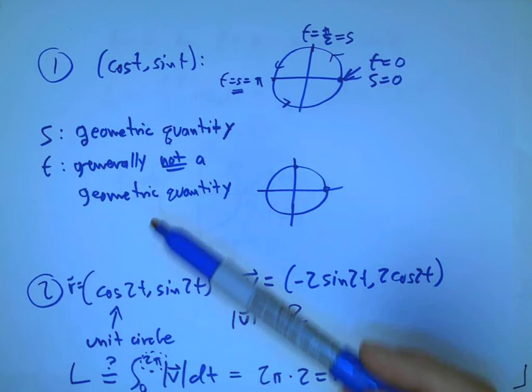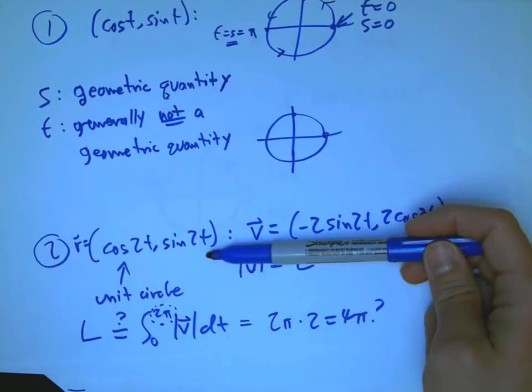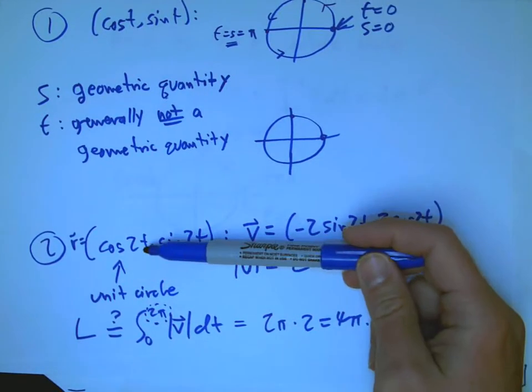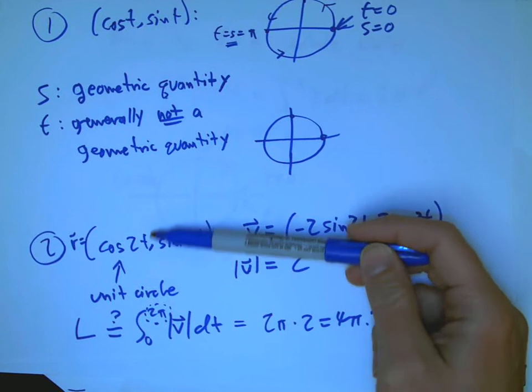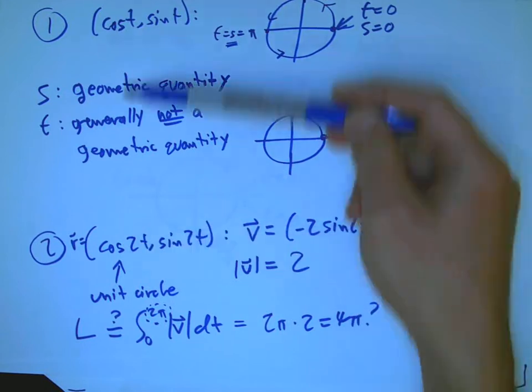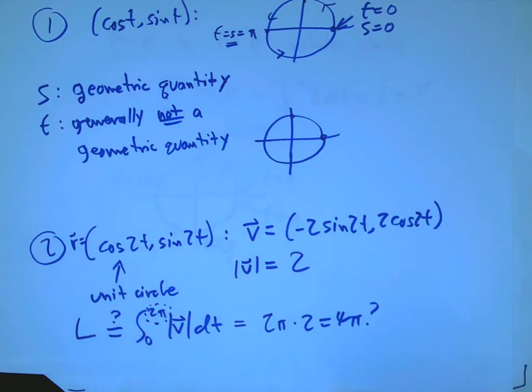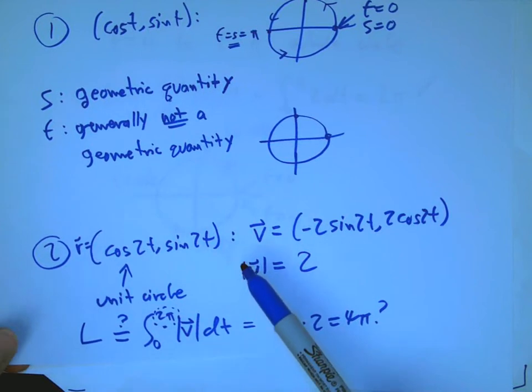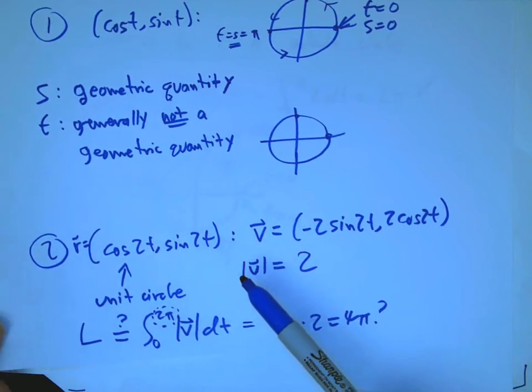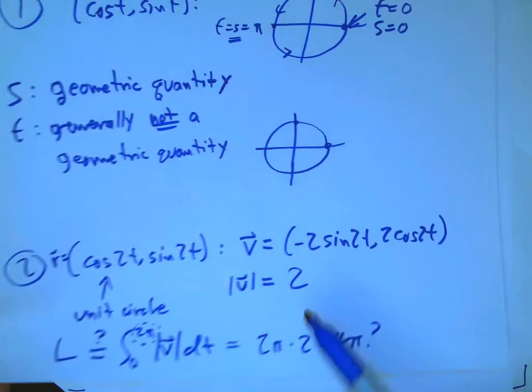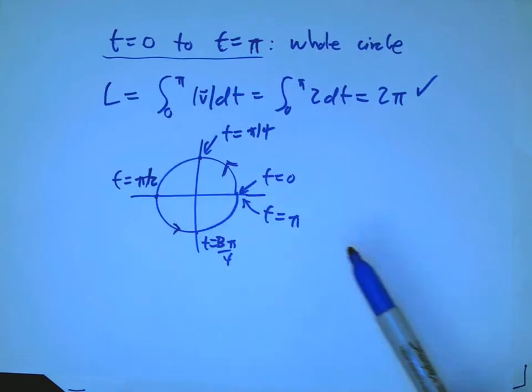So, that's showing how nice it is to have the unit speed parameterization. Because, t really is measuring something that's really physically interesting. It's the length so far. Now, what we'll return to is the question of, suppose somebody gives me something like this. Here, it's pretty easy to fix. I can just change the variable and just package up that 2t and turn it back into this nice example. But, what if I have something more complicated? Is it possible to turn it into something that's parameterized by arc length that has unit speed?